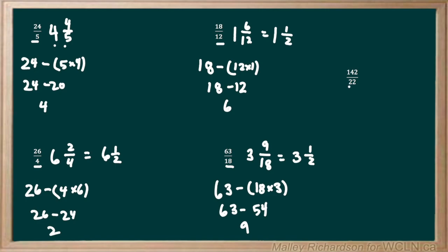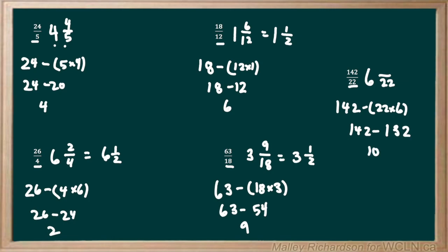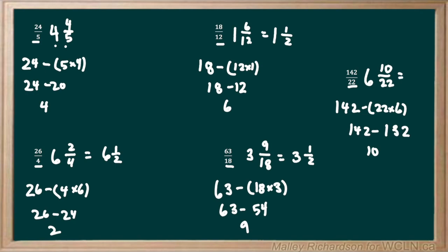For our final question, we have to see how many times does 22 go into 142, which is 6 times. So our coefficient of our mixed number is going to be 6, and then we're going to need a fraction beside it with the same denominator as the original question. To find the numerator, we take 142 minus 22 times 6, which is 132. 142 minus 132 is 10, so we have 6 and 10 over 22. But 10 over 22 can reduce down, so we have 6 and 5 over 11 as our final answer.